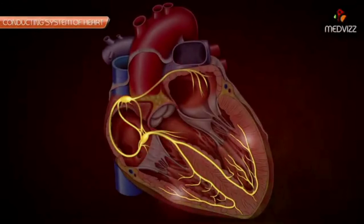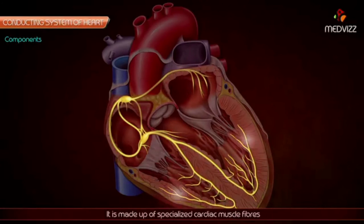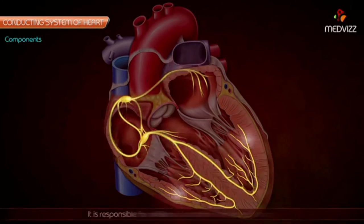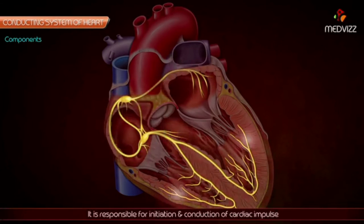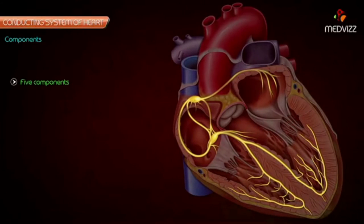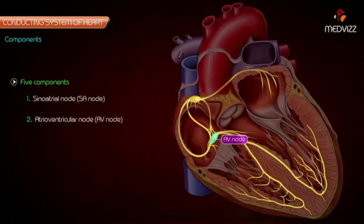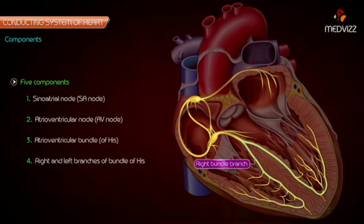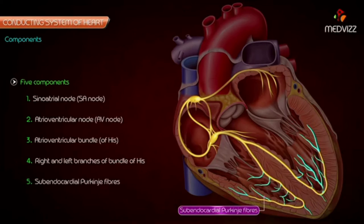Conducting System of the Heart — Components. The conducting system of the heart is made up of specialized cardiac muscle fibers and is responsible for the initiation and conduction of the cardiac impulse. The conducting system consists of the following five components: sinoatrial node, atrioventricular node, atrioventricular bundle, right and left branches of the bundle of His, and subendocardial Purkinje fibers.